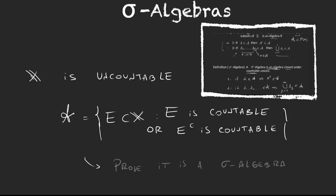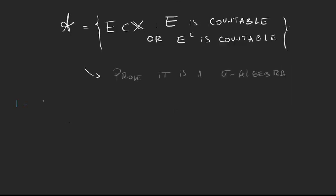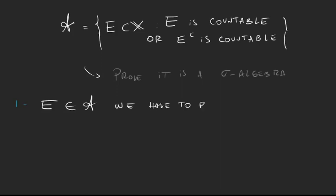Let's start with the first property — closure under complements. Let's grab an element E that is in A. We have to prove that E complement is also in A. To make this easier, let's call E complement B. The subsets in A are those sets that are countable or whose complement is countable, so let's check the two cases, because E could be either countable or have a countable complement.